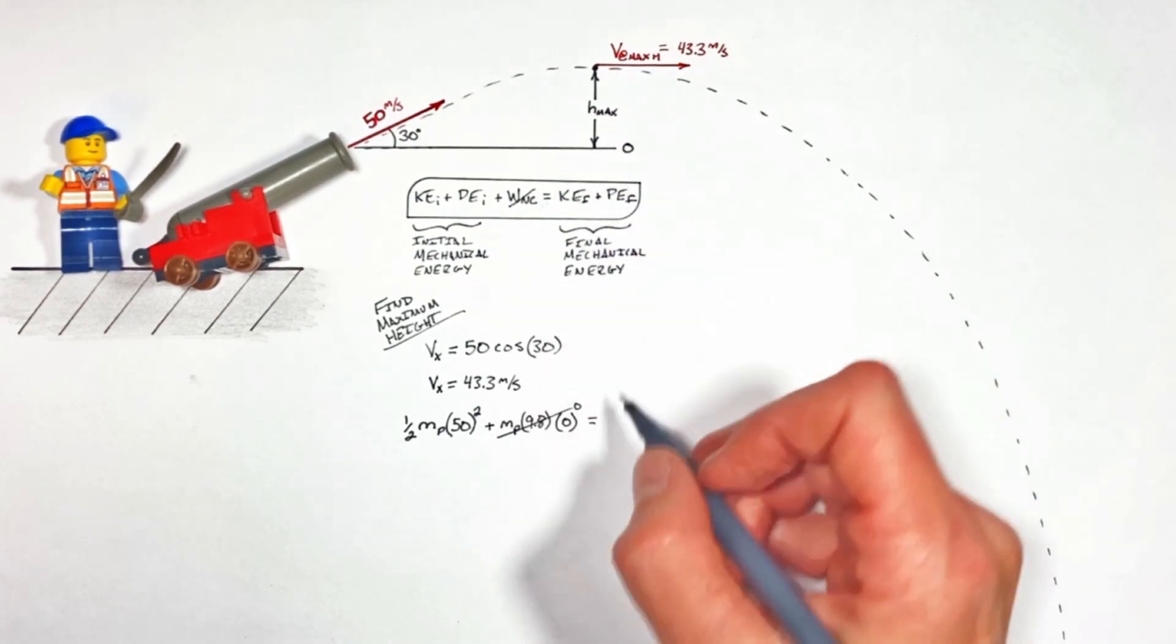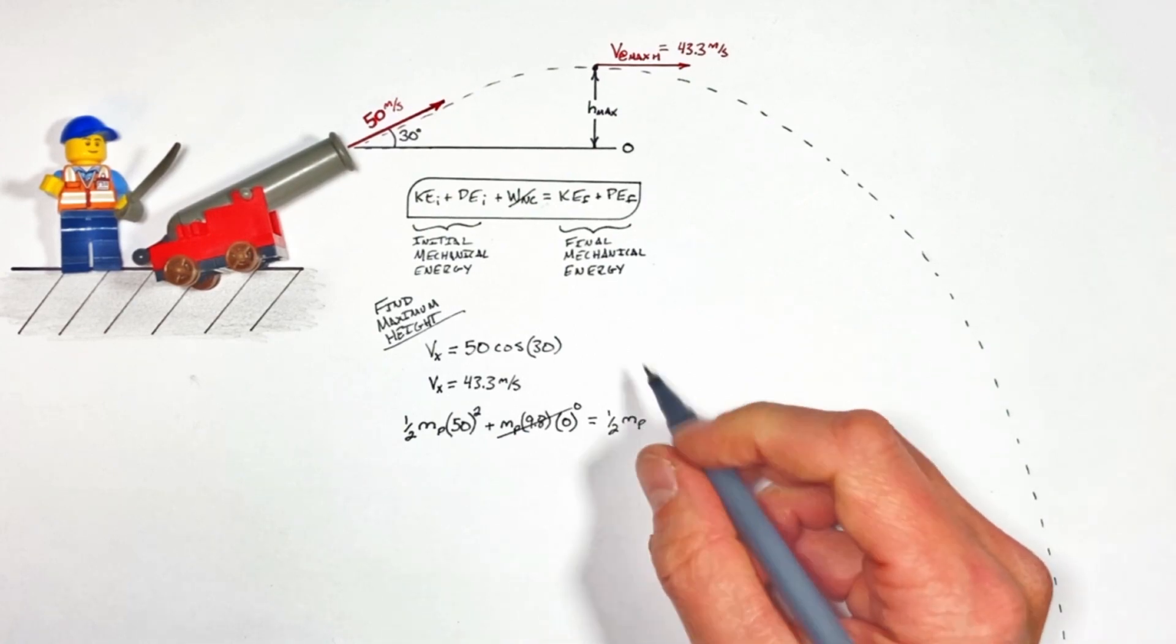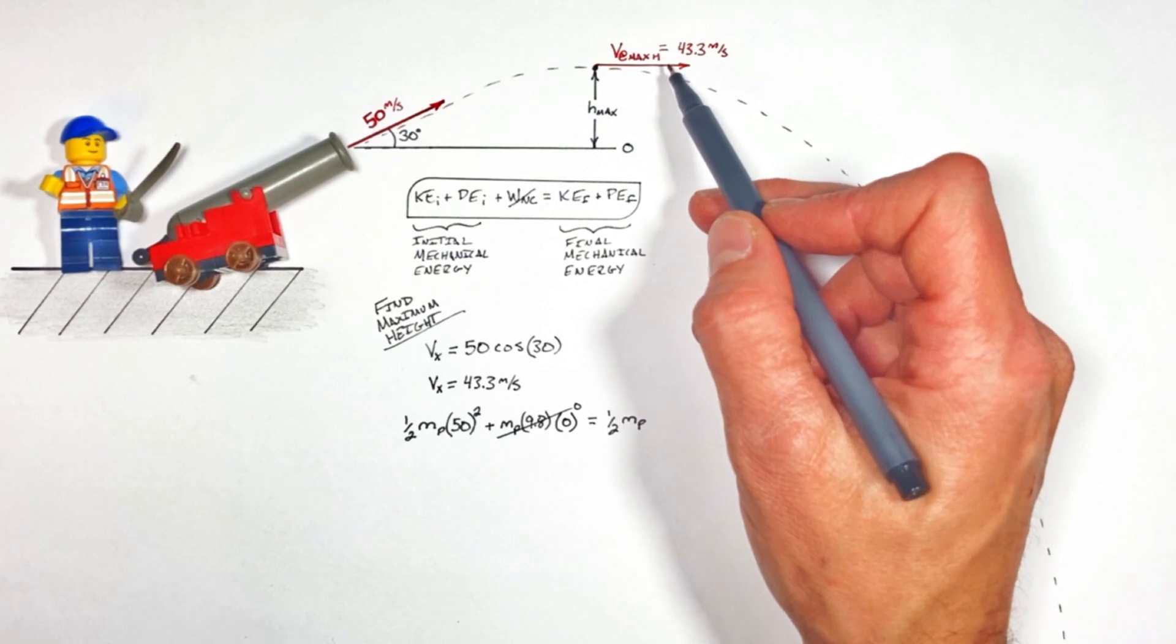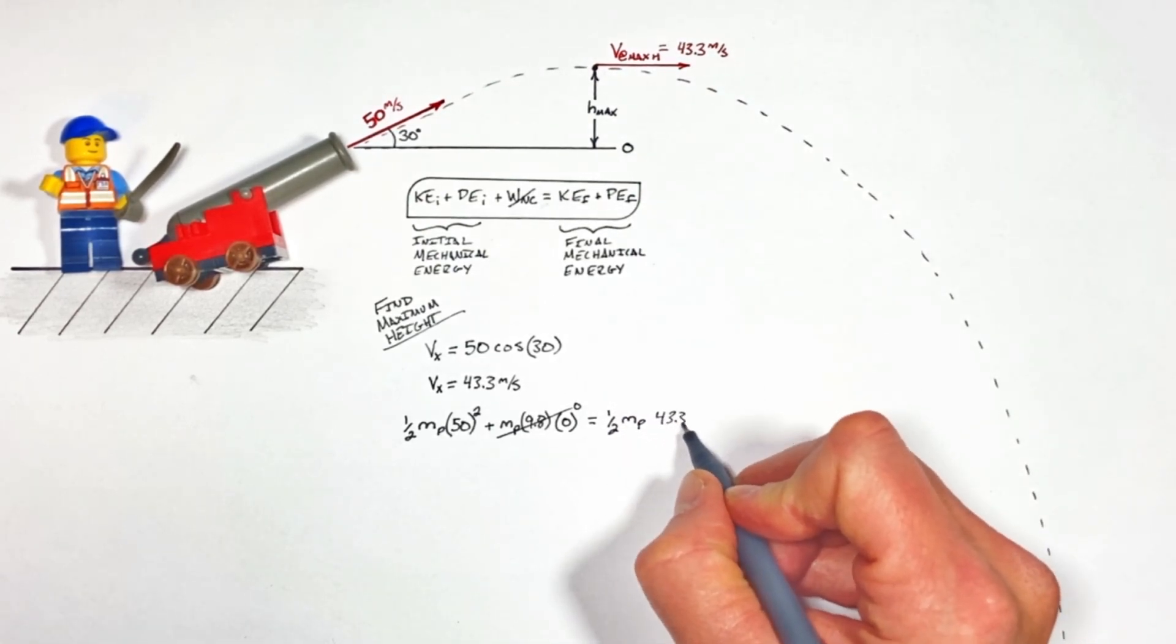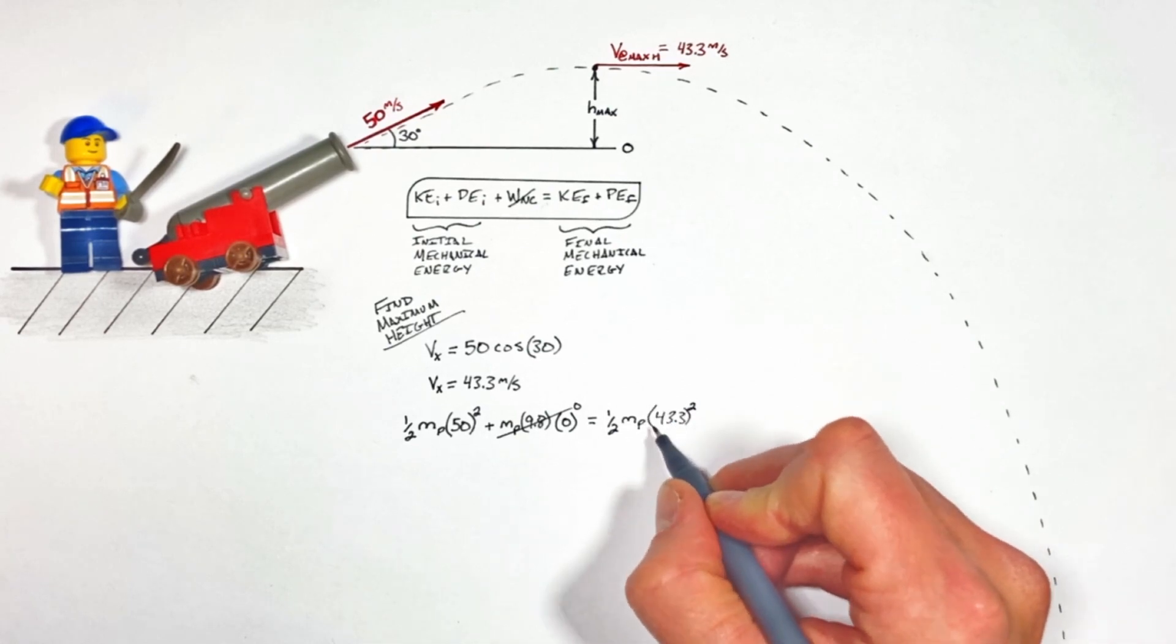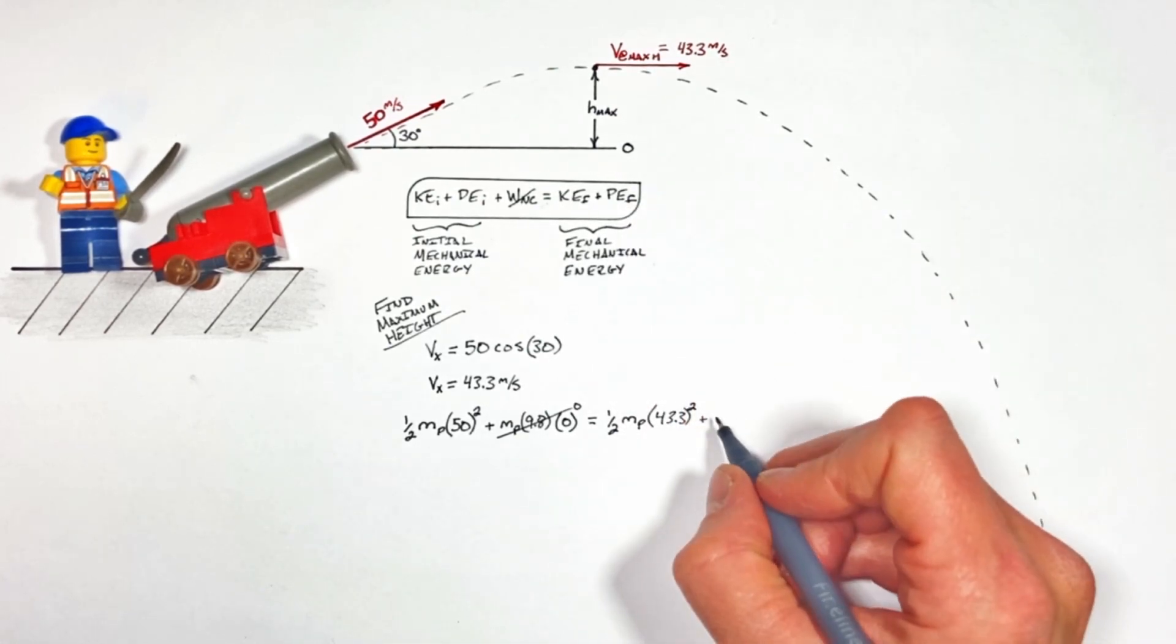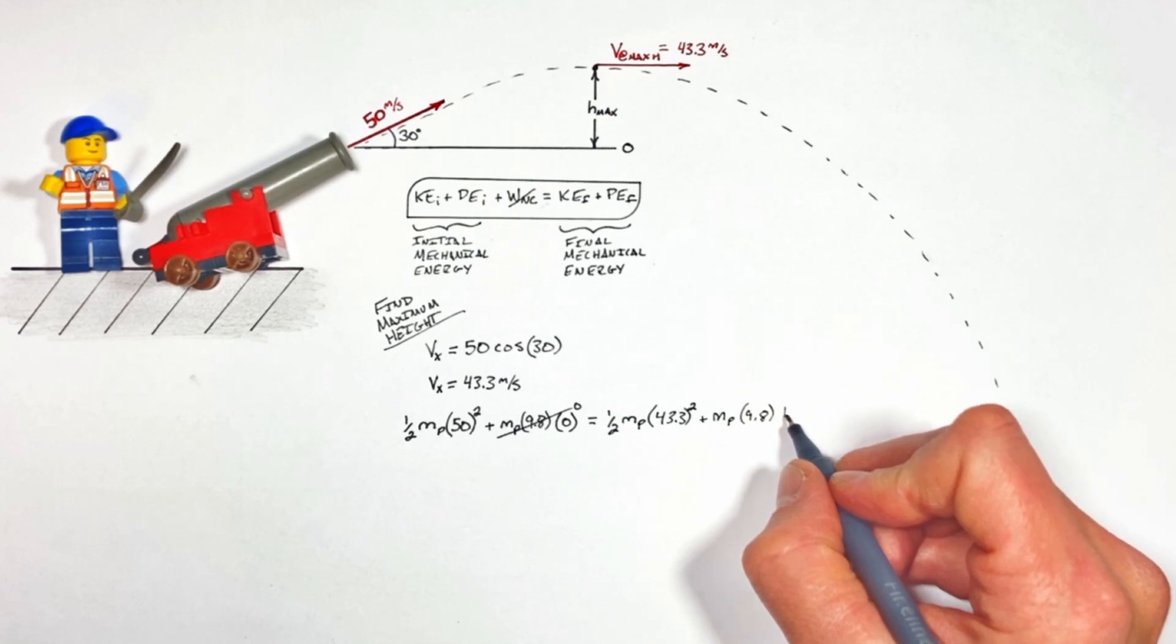That's going to be one-half times the mass of our projectile times its velocity at the point in time we're concerned with. In this case, at maximum height, that's 43.3 squared, plus the final potential term. That's going to be mp times 9.8 times the height we're trying to solve for—I'm going to call that h max.